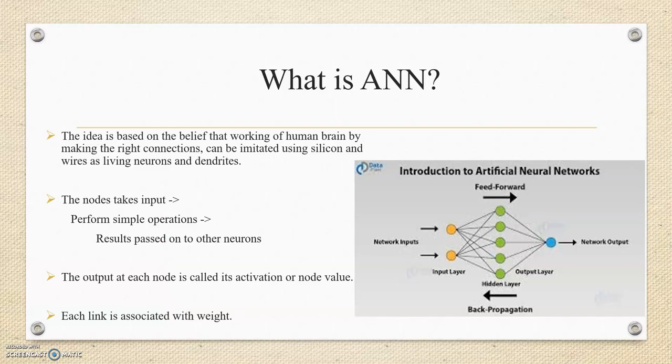Let's get started with the first point: what is Artificial Neural Network. The idea of Artificial Neural Networks is based on the belief that working of a human brain by making the right connections can be imitated using silicon wires as living neurons and dendrites. We can simply put it as Artificial Neural Networks are software implementations of the neural structure of human brain.